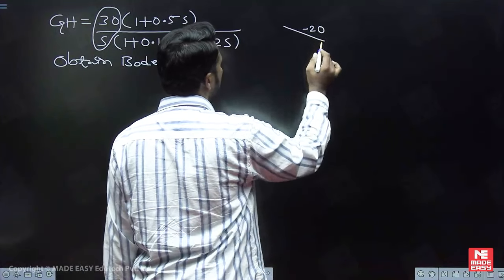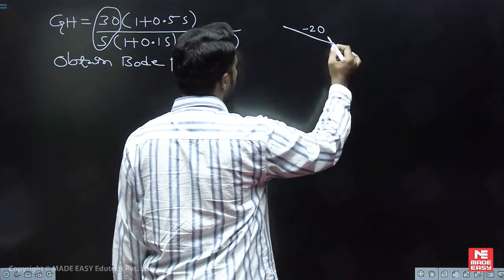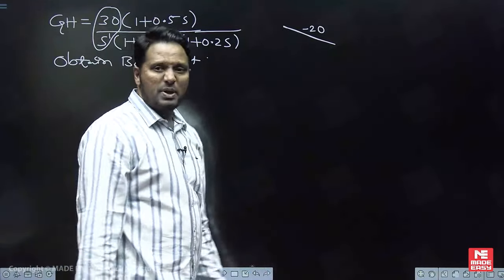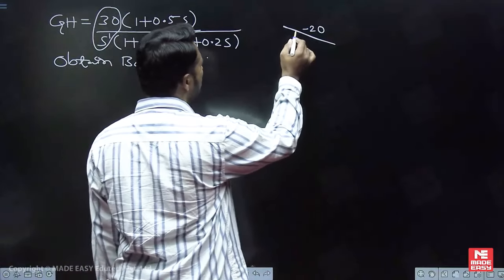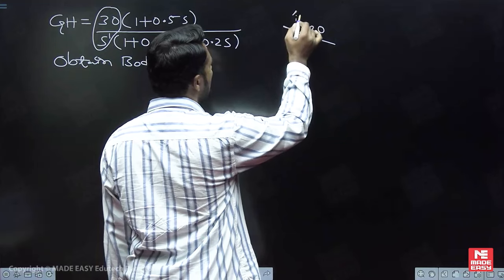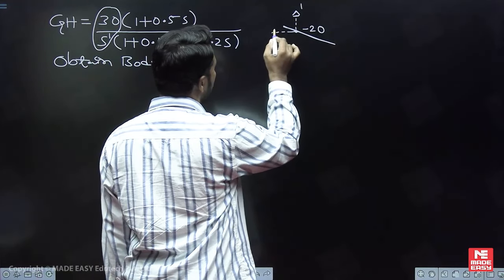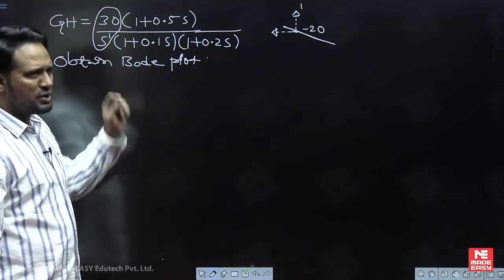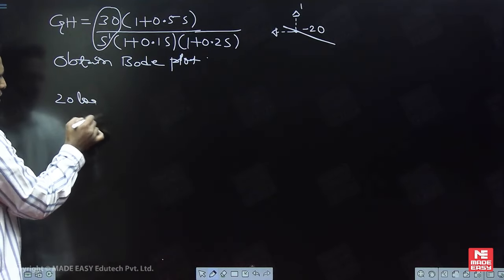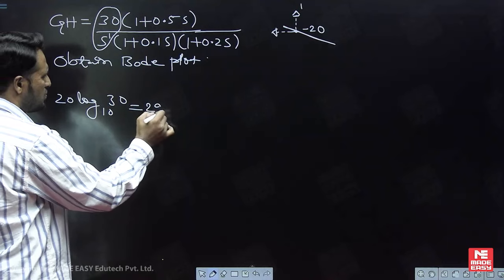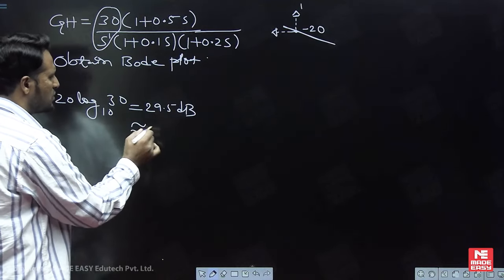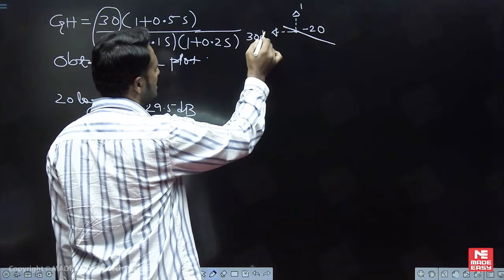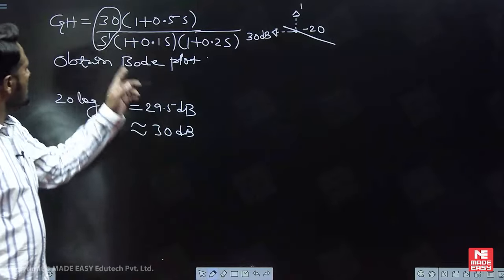The slope is minus 20R dB per decade. So if R is 1, slope is minus 20 dB per decade. It passes through a point — we can choose any point — let us say (1, 20 log K to the base 10). For K = 30: 20 log 30 to the base 10 becomes around 29.5 dB, which I am rounding up to 30 dB. So this magnitude becomes 30 dB. The Bode plot of K/s^r is drawn.